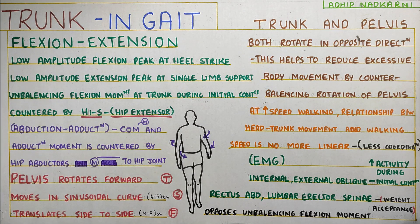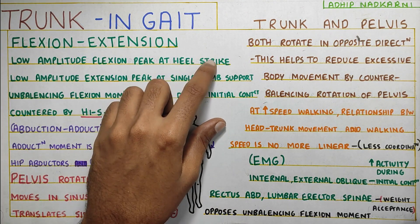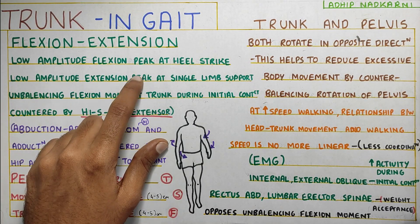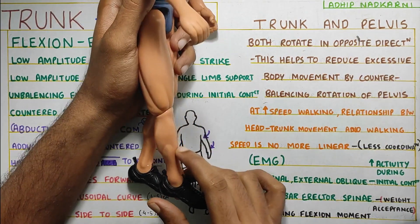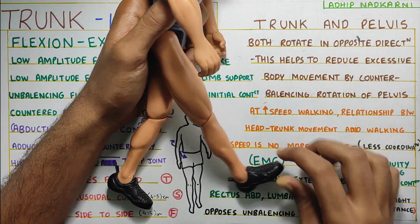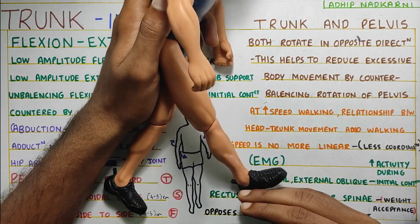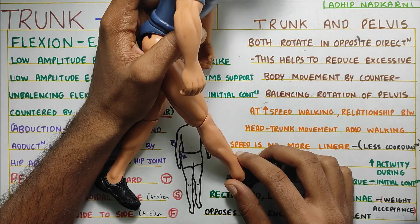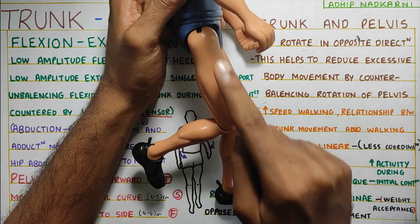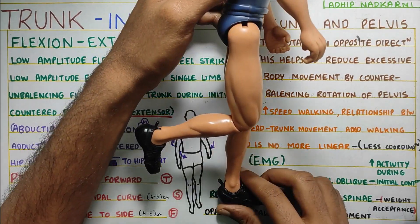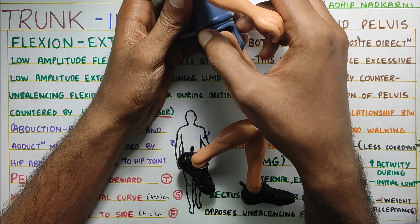Starting with flexion and extension: a low amplitude flexion peak was seen during the heel strike, whereas a low amplitude extension peak was seen during single leg support. To understand this — during the initiation of gait and during the heel strike, there is an unbalancing force when your heel strikes the ground, causing your trunk to slightly go into flexion. That is the flexion peak. Then as you are weight bearing and accelerating ahead, there is a slight extension peak seen during gait.